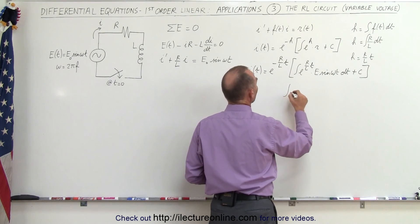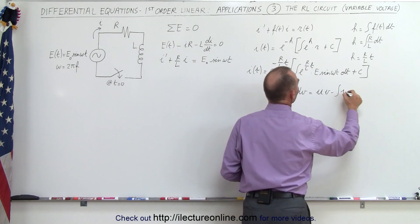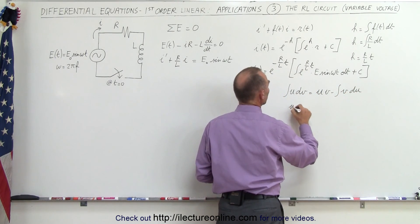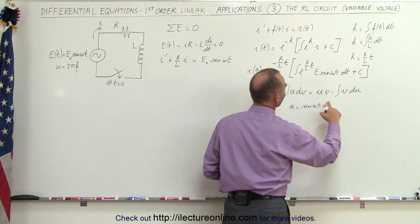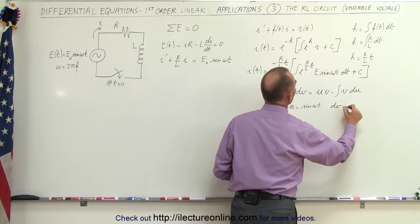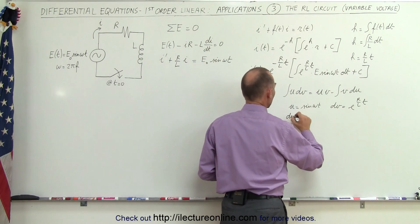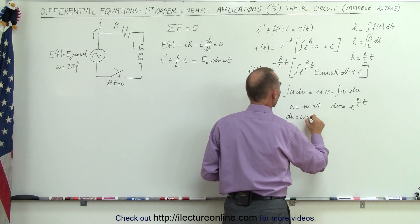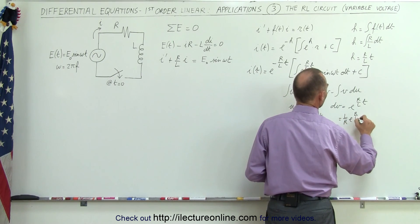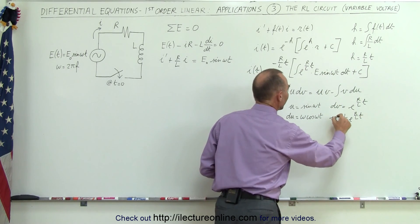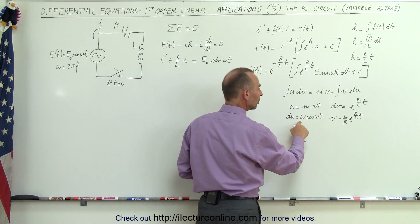To integrate U times dV equals U times V minus the integral of V times dU, we let U equal the sine of omega t and dV equal E to the R over L times time. Then dU equals omega times the cosine of omega t, and V equals L over R times E to the R over L times time. We then apply U times V minus the integral of V times dU, and we have to apply integration by parts a second time.